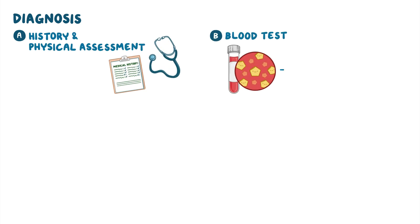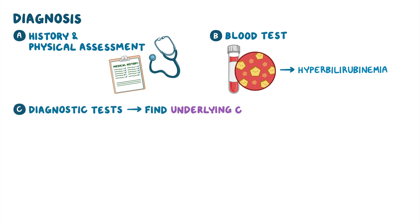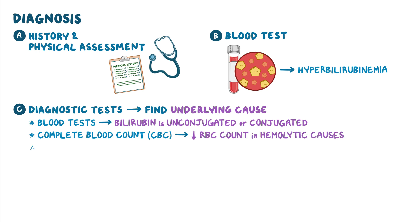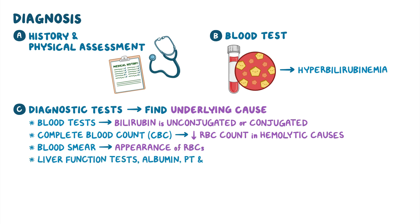The diagnosis of jaundice starts with a client's history and physical assessment. These are followed by blood tests revealing hyperbilirubinemia. Additional diagnostic tests can help find the underlying cause, including blood tests to detect if bilirubin is unconjugated or conjugated. Additionally, a complete blood count, or CBC, shows decreased red blood cell count in clients with hemolytic causes. A blood smear can reveal the appearance of the red blood cells. Clients may also get liver function tests, albumin, PT, and PTT, which can be abnormal in clients with liver damage.